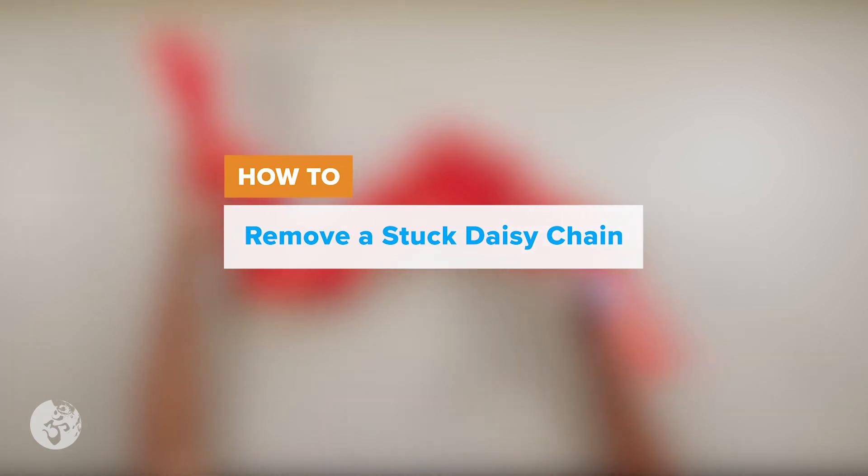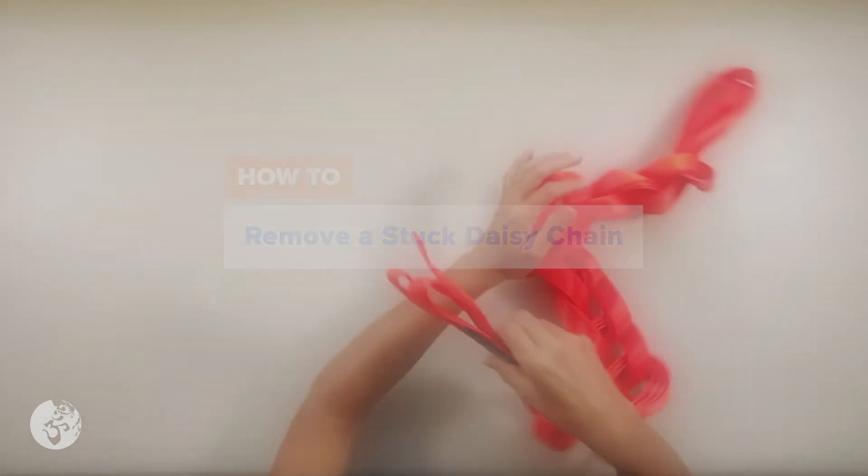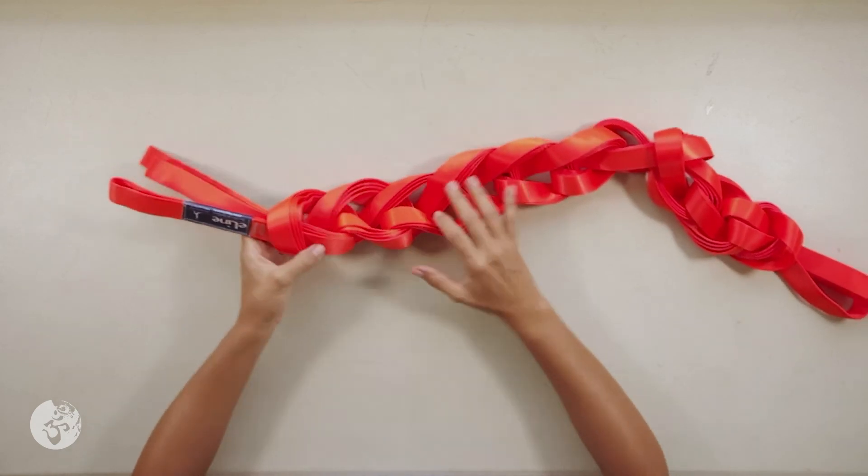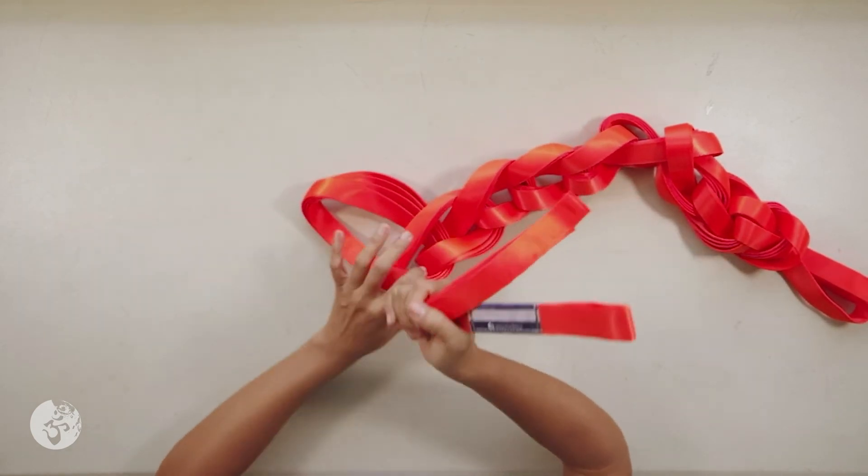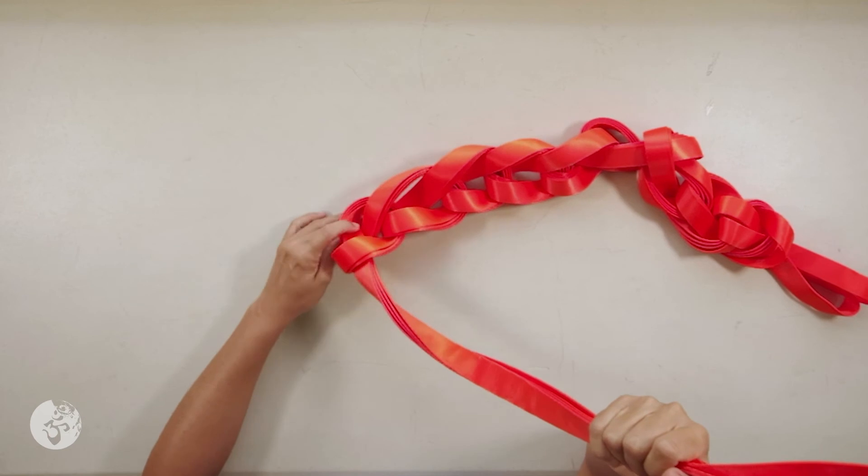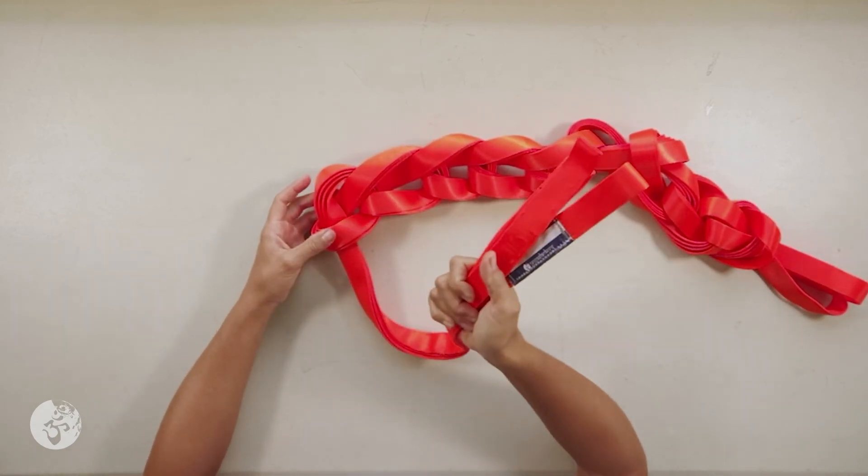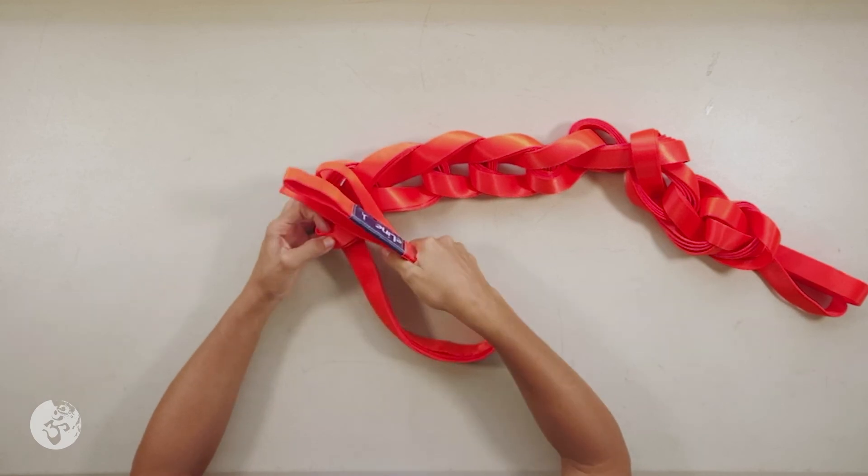Now, every so often someone will do the daisy chain for you and they might start in the wrong direction or you might have forgotten on which side you started and you take a loop out and it doesn't come out. And you might be tempted to just have to do it one piece at a time.